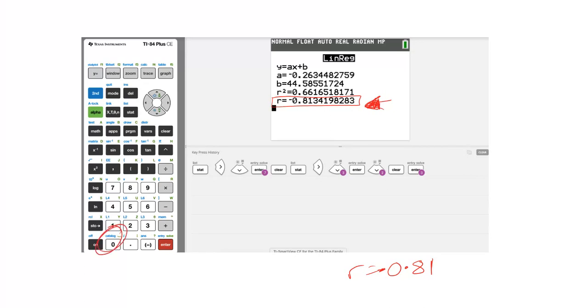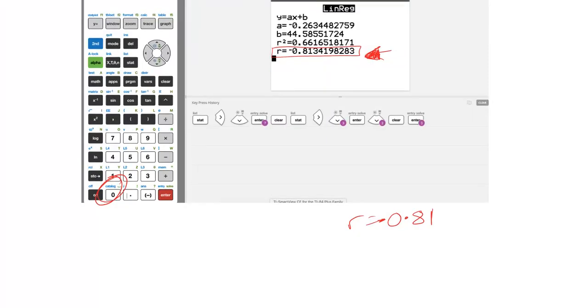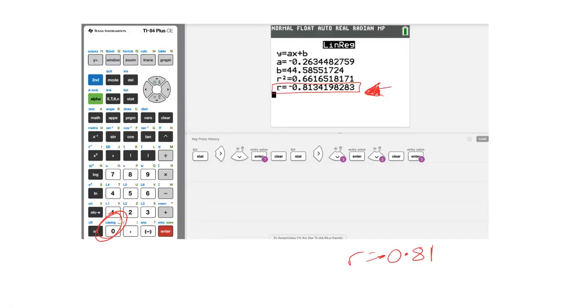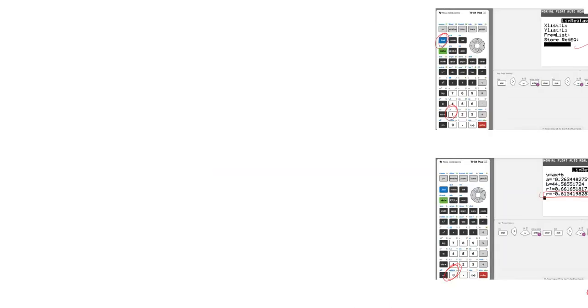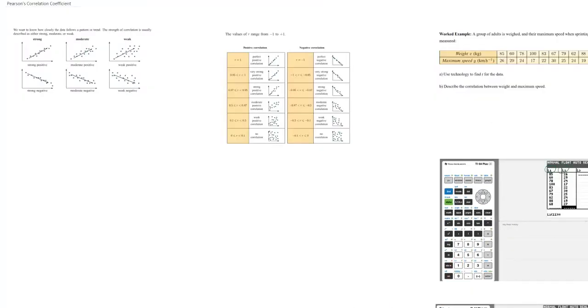If you go into the catalog feature and then you scroll through all the settings until you find the words diagnostic on. And once you see the diagnostic on, press it, turn it on, and then next time you do this, you will see that R value. Hopefully that has helped you to find Pearson's correlation coefficient.